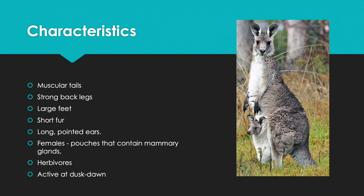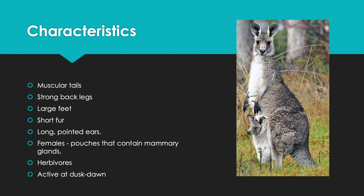Focusing on characteristics, the slide shows a mother kangaroo with a baby in her pouch. Red and eastern kangaroos have muscular tails, strong back legs, large feet, short fur, and long pointed ears. Females have pouches on the anterior portion containing mammary glands where young are kept until ready to leave. They are herbivores and mostly active at dusk to dawn, foraging for food at night.